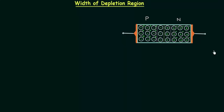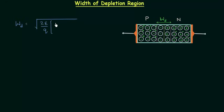This is the PN junction diode with no applied bias. Because of diffusion we have a depletion layer, and the width of the depletion layer is W subscript d. The formula is: W_d = sqrt( (2ε/q) · (1/Na + 1/Nd) · Vb ). This is the expression for width of depletion layer.